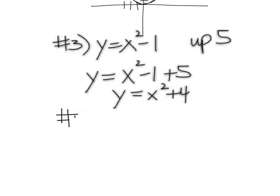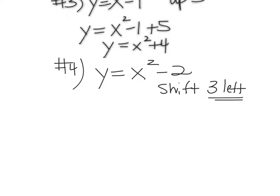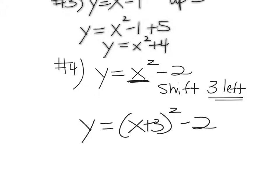Number four: y equals x squared minus 2, and I want to shift this three to the left. Left and right are tricky. Up and down, I just add it to the end. But left and right, you really have to think. It's going to go on the inside with the x. And you have to remember it's the opposite way you think. So for three to the left, I write (x plus 3) squared, and then keep that minus 2 as is.